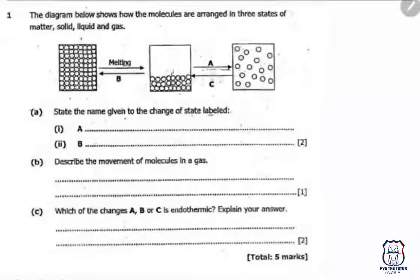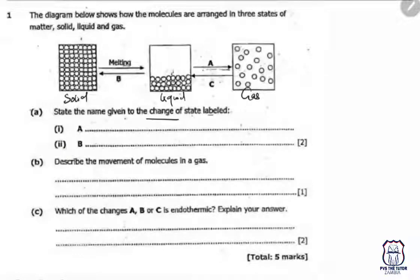The states shown are solid, liquid, and gas. The question asks for the name given to the change of state labeled A. Before answering, you need to know that A represents a change from liquid to gas, which is called evaporation.